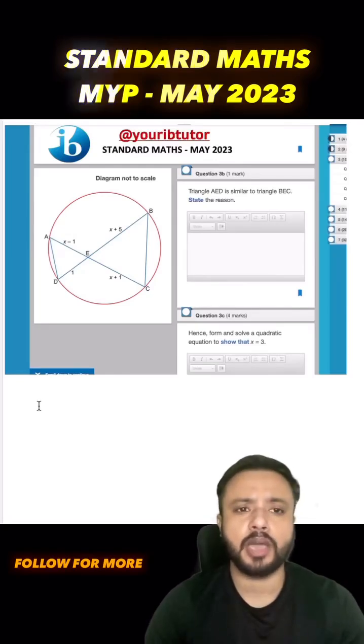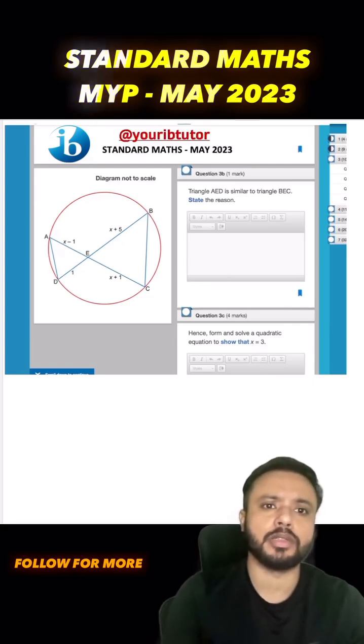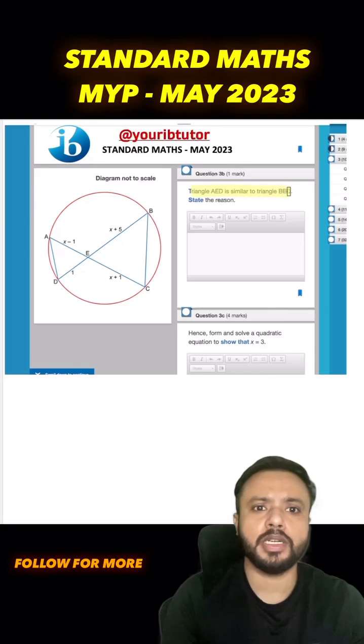Let's break down this question which was asked in IB MYP Standard Maths May 2023 examination. This question is basically a combination of circle geometry and similar triangles. In the question, it's given that triangle AED is similar to triangle BEC, and we have to state the reason.